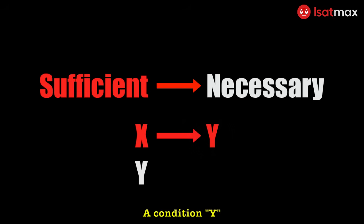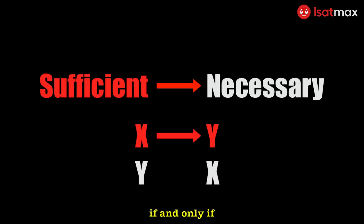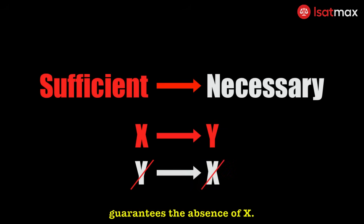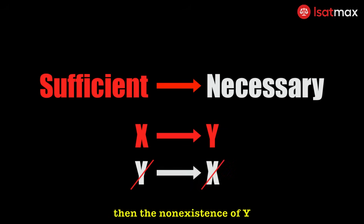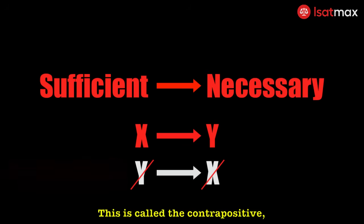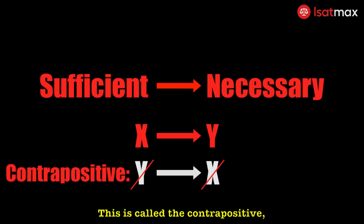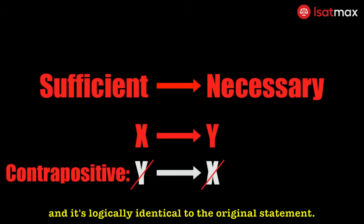A condition Y is said to be necessary for another condition X if, and only if, the absence of Y guarantees the absence of X. In other words, if Y is necessary, then the non-existence of Y means the existence of X cannot be true. This is called the contrapositive, and it's logically identical to the original statement.